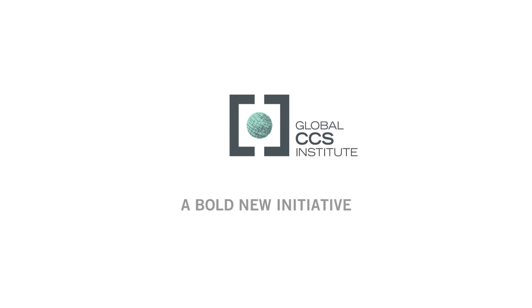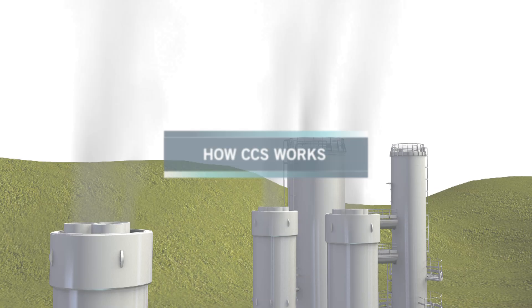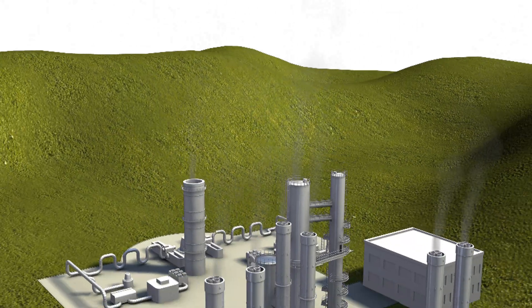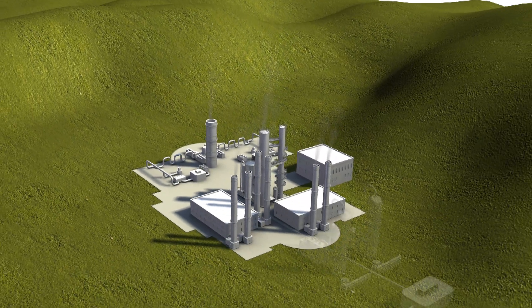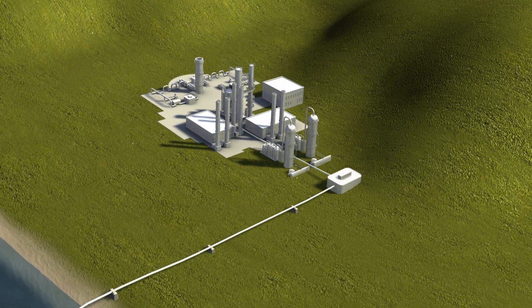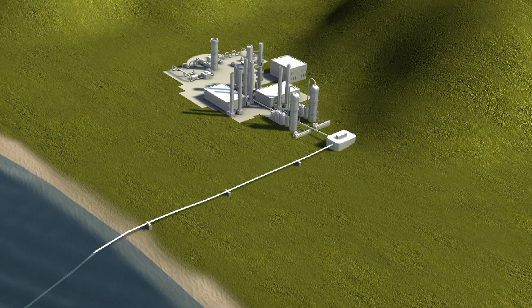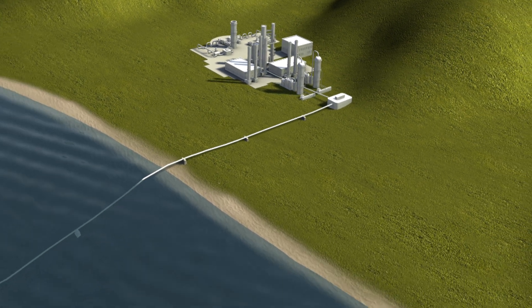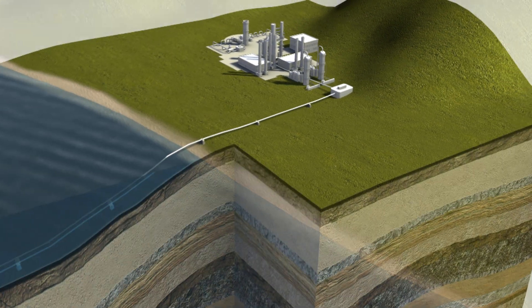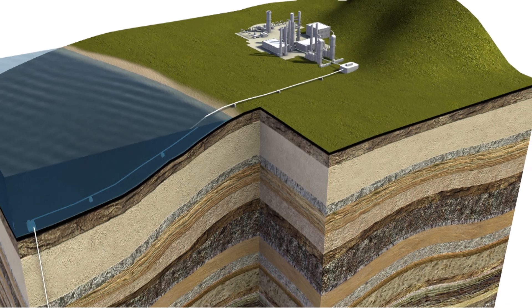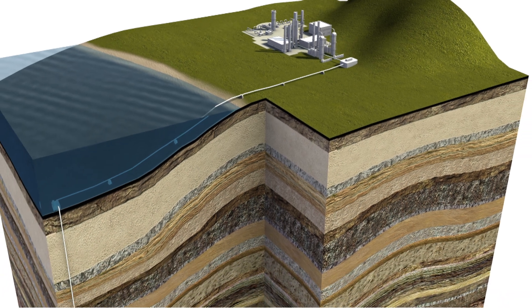Large amounts of CO2 are released when fossil fuels are burned at power plants or other industrial processes. This CO2 can be isolated and captured. Once separated, the CO2 is compressed and transported to a suitable geological storage site.